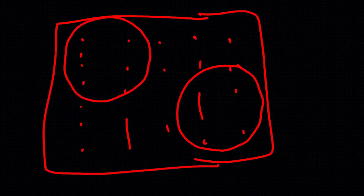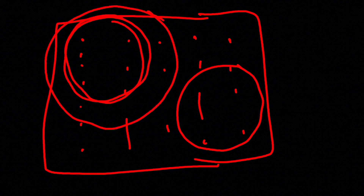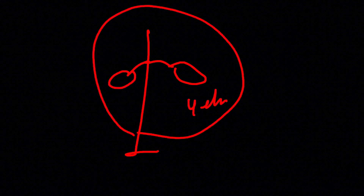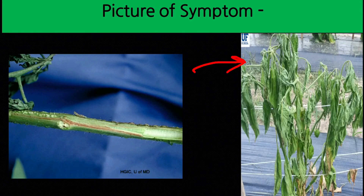Wilted plants field में patches में present होते हैं — पूरा field एक बार में नहीं मरता। Pathogen soil में रहता है और हर साल धीरे-धीरे area बढ़ाता है। अगर lower stem या root को काट कर देखें तो vascular tissue में browning दिखाई देती है — fungal growth के कारण xylem और phloem brown हो जाते हैं।